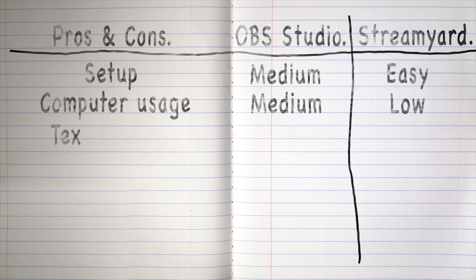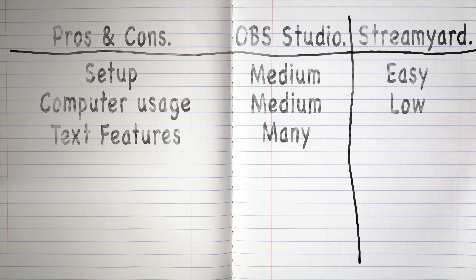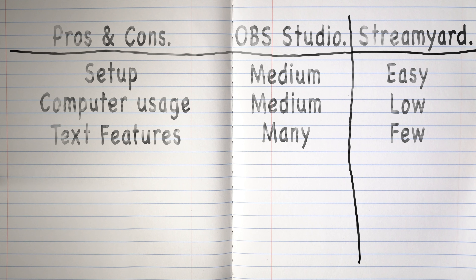What are the text features like on these two applications? OBS Studio has a really robust text feature that allows you to create just about any sort of text you want and place it anywhere on the screen. StreamYard's text features are really easy to use, but you don't have a lot of options and you can only place text in the lower third banner area.